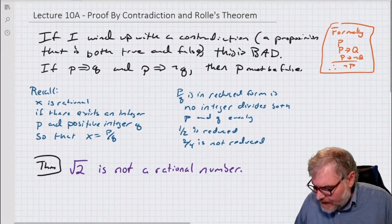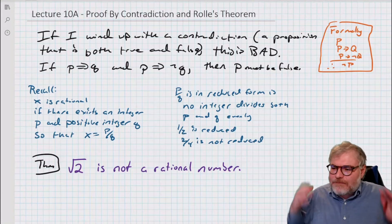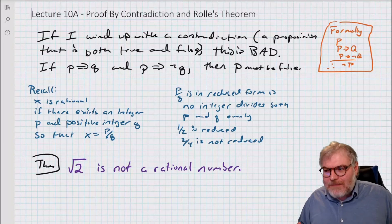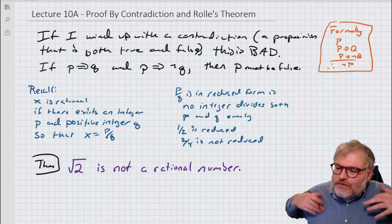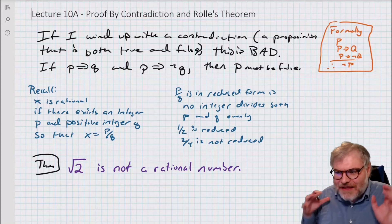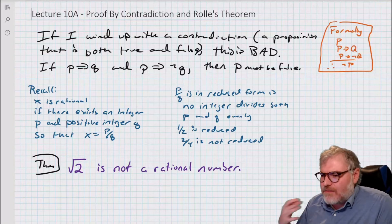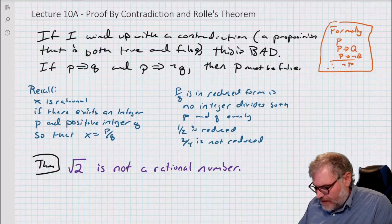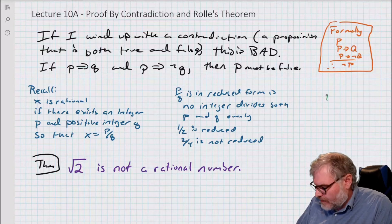The most famous of these proofs is the proof that the square root of 2 is not rational. Recall: X is a rational number if I've got an integer P and a positive integer Q such that X equals P over Q. So rational numbers are things like one half, one third, two — these are examples of rational numbers.